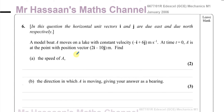The question says a model boat A moves on a lake with constant velocity minus i plus 6j meters per second, where i and j are unit vectors due east and due north. At time t equals zero, A is at the point with position vector 2i minus 10j meters. We need to find the speed of A. The speed is the magnitude of its velocity — it's never given in vector form.